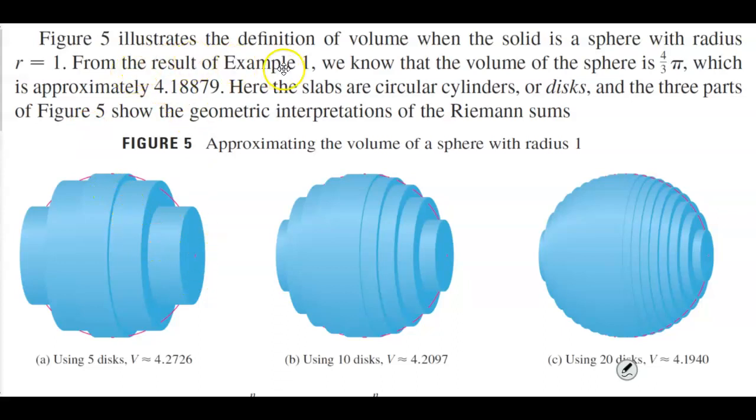From the result of example 1, we know that the volume of the sphere is 4/3 π, which is approximately 4.18879. Here the slabs are circular cylinders or disks, and the three parts of Figure 5 show the geometric interpretations of the Riemann sums.